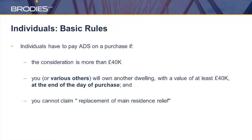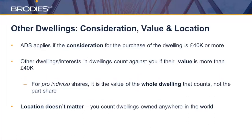The basic rules for ADS: you have to pay it if the consideration is more than £40,000 and you or various others own another dwelling with a value of £40,000 at the end of the day of purchase, and you cannot claim replacement of main residence relief. On the purchase side we're looking at the consideration for the purchase, but when figuring out whether interests in other dwellings count against you, it's the value — so it's two different things. You don't have to get professional valuations to arrive at that value, but you might have to in some cases where it's particularly significant.